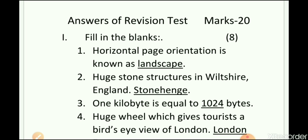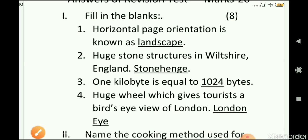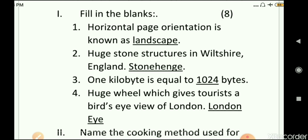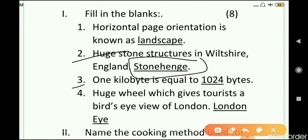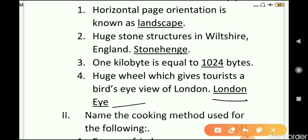The first question was fill in the blanks. First: horizontal page orientation is known as landscape. Second: huge stone structures in Wiltshire, England — Stonehenge. Third: one kilobyte is equal to 1024 bytes. Fourth: the huge wheel which gives tourists a bird's eye view of London is the London Eye.